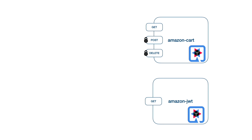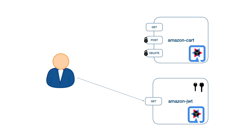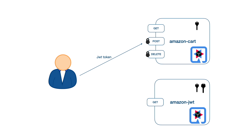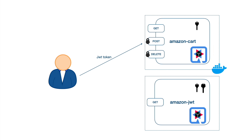The Amazon JWT exposes one GET endpoint and, with a private and public key, it will generate the JWT token. The user can call the GET endpoint and retrieve the JWT token. The Amazon Cart project will use the same public key to verify the JWT token and authenticate the user. In the end, we are going to dockerize both services. Now, let's start and follow my steps.